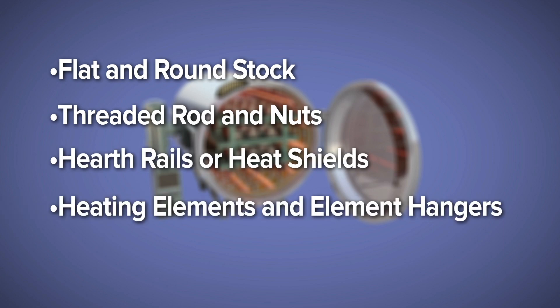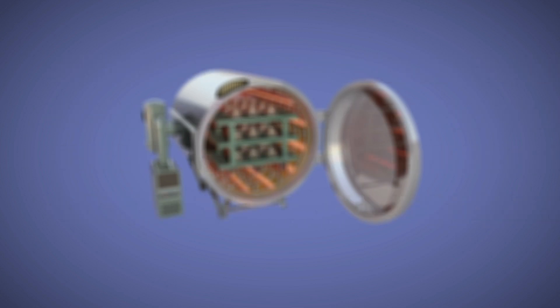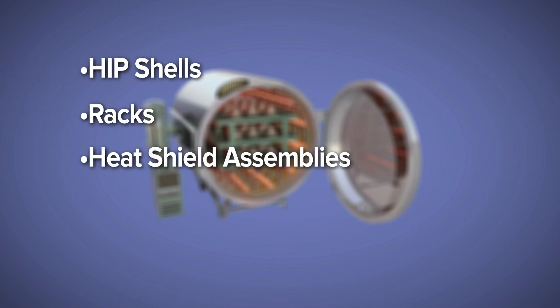Elmet's capabilities extend to even more advanced furnace assemblies, including hip shells, racks, heat shield assemblies, and more.